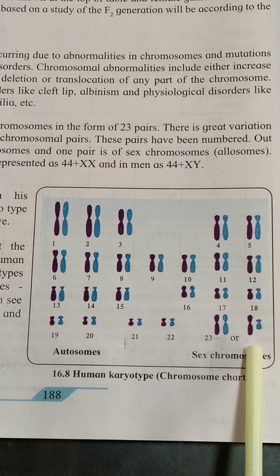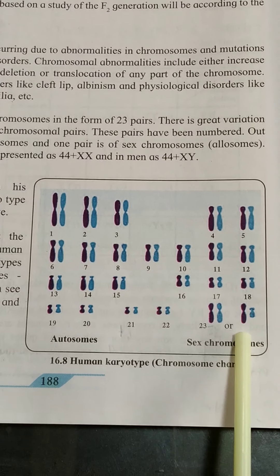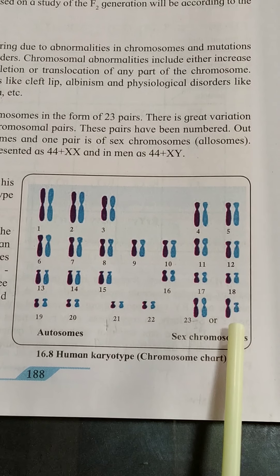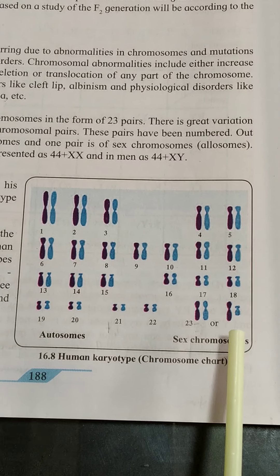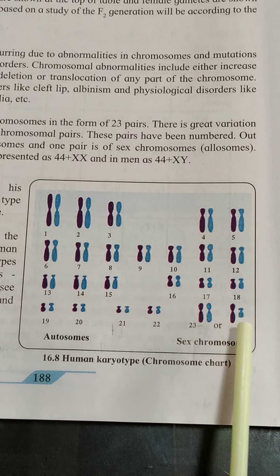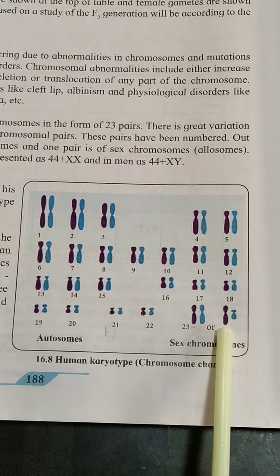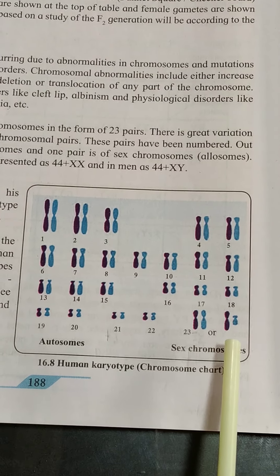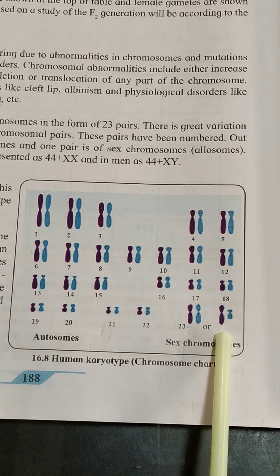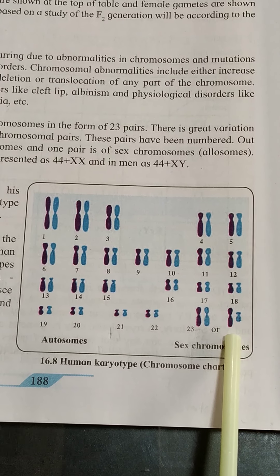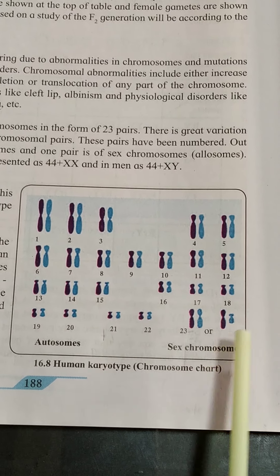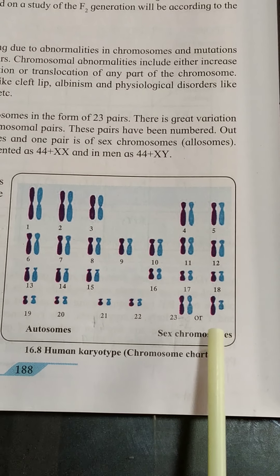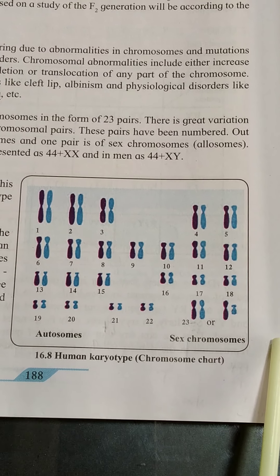Now we will see what will happen if the 23rd pair in males is damaged or faulty. If instead of XY chromosomes, an extra X chromosome is added to the 23rd pair, there will be a genetic disorder in men called Klinefelter syndrome. In this condition also, the male will be sterile and cannot produce children, but they can live a normal life.